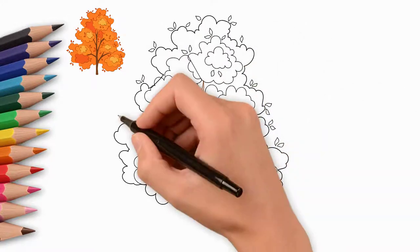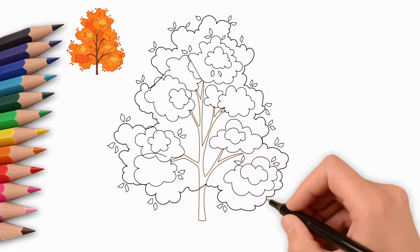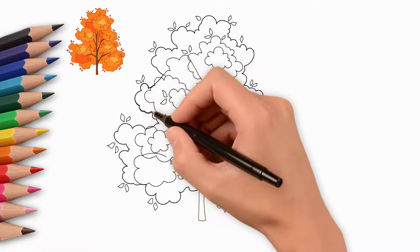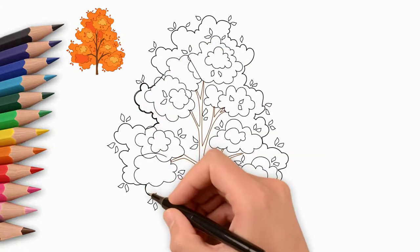Take colored pencils or colored paints, it's time to paint our tree. This is an autumn tree. We paint it in orange and light brown.